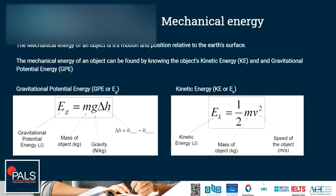The mechanical energy of an object is its motion and position relative to the earth's surface. The mechanical energy of an object can be found by knowing the object's kinetic energy and gravitational potential energy. Below are the formulas how to find the gravitational potential energy and kinetic energy of an object.